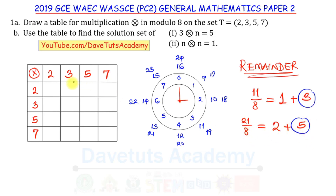You can apply the same remainder principle for modulo 9, modulo 15, modulo 20, or whatever modulus you are working with. With this understanding, we can now build the multiplication table. We multiply the row element by the column element; for example, 2 × 2 = 4, which is less than 8, so we write 4 directly.